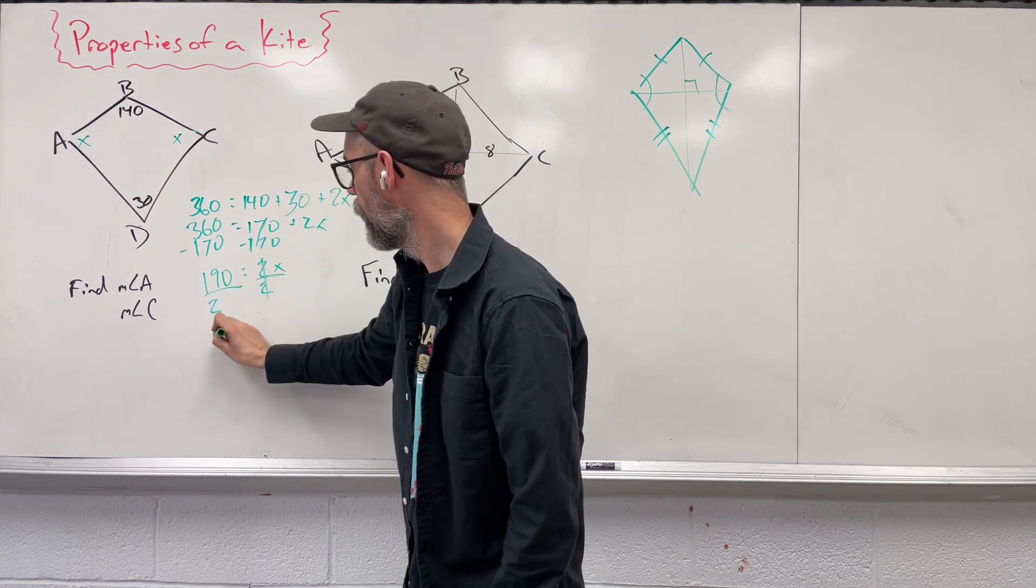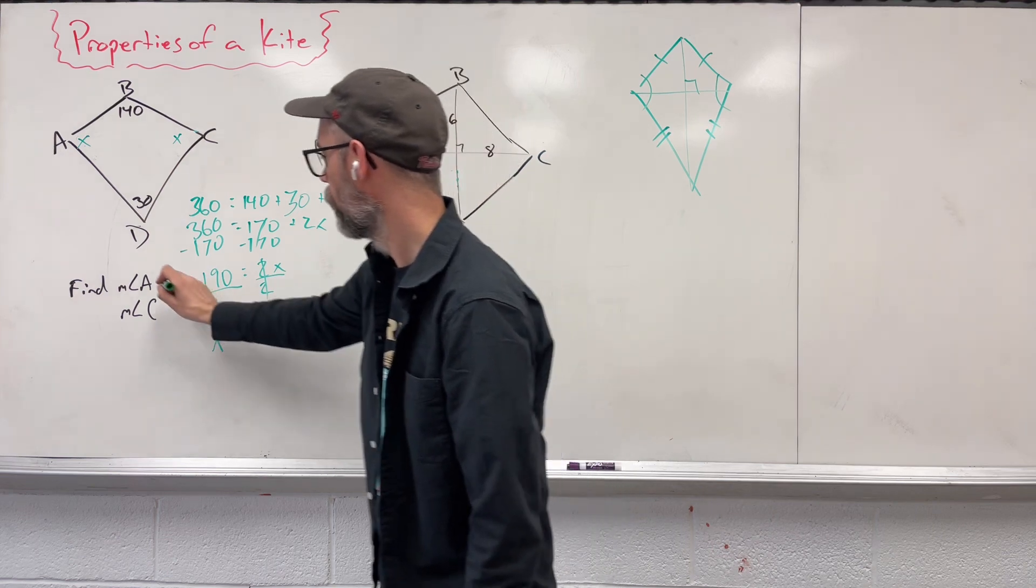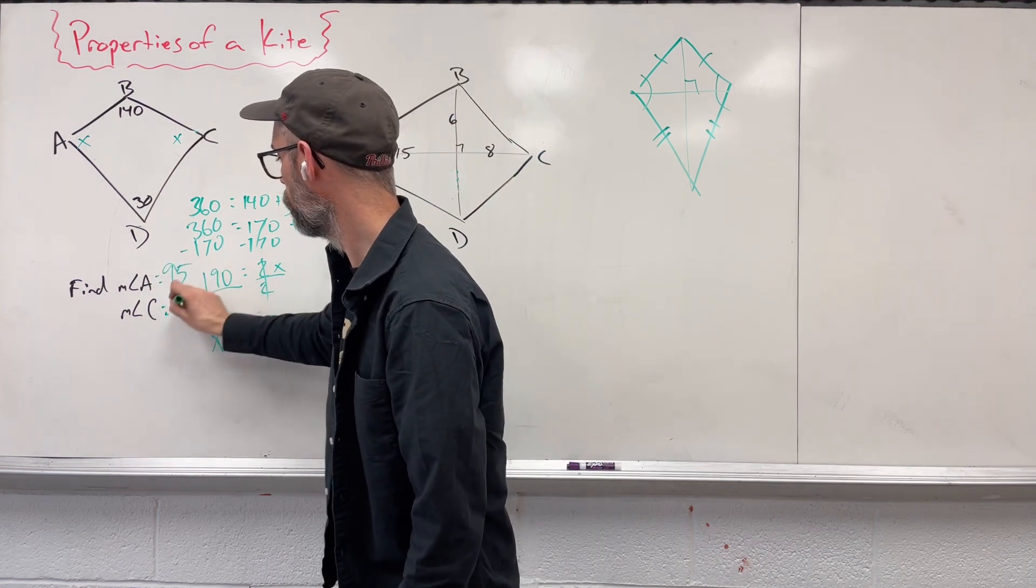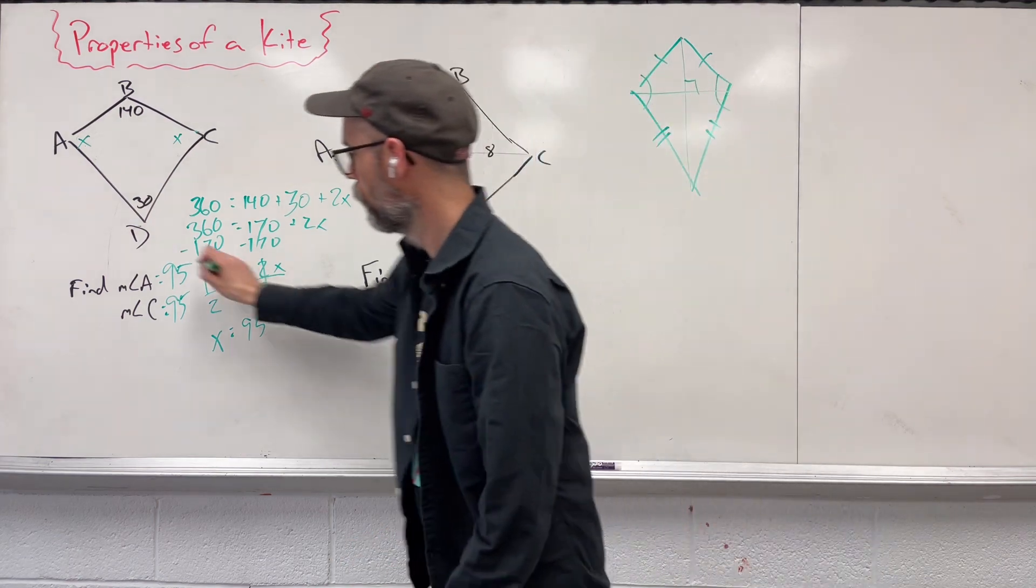Divide both sides by 2 and X ends up being 95 degrees. So there's our two measurements, 95 and 95. Okay, so that's good.